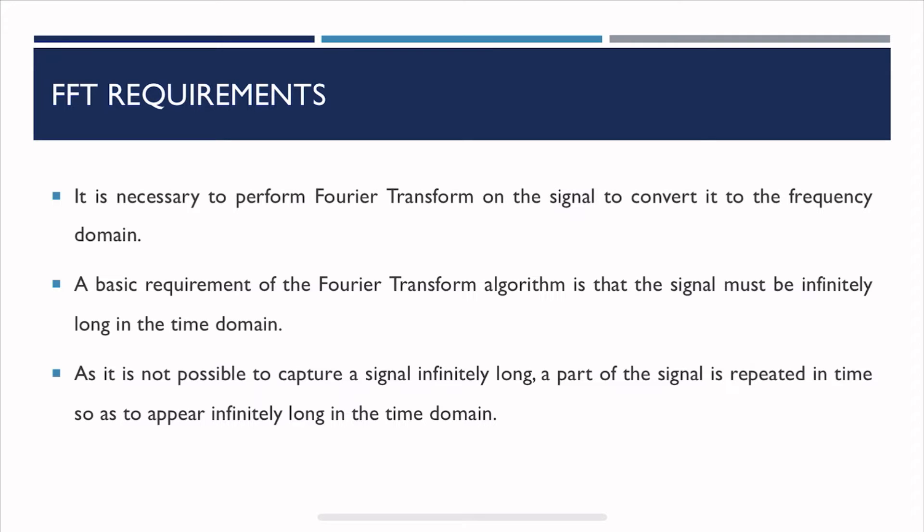We know that it is not possible — we can only capture a signal that is finite in the time domain. So in order to satisfy that Fourier transform algorithm, a part of the signal is repeated in time, or it is appended one after the other in time, so as to appear infinitely long in the time domain, and hence we can perform the Fourier transform analysis. Now here's where the problem starts. If you append the signal one after the other, there is no guarantee that the final infinitely long signal is continuous in the time domain. And if it's not continuous, it leads to discontinuities, which is where we need windowing.